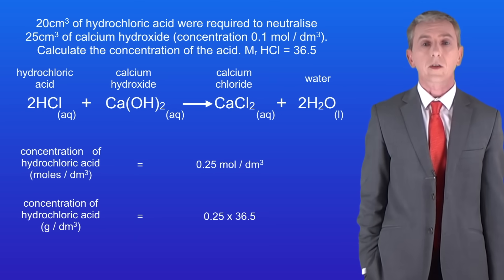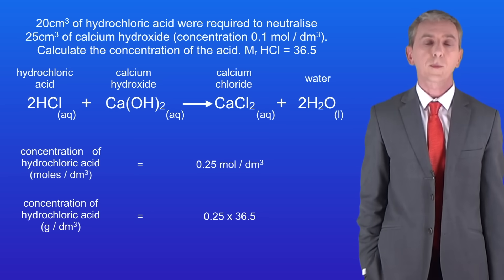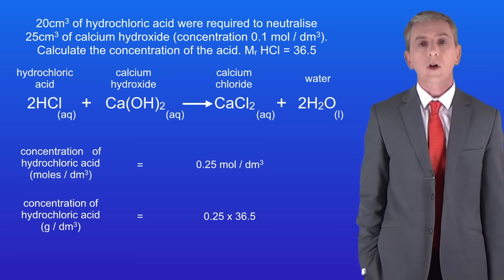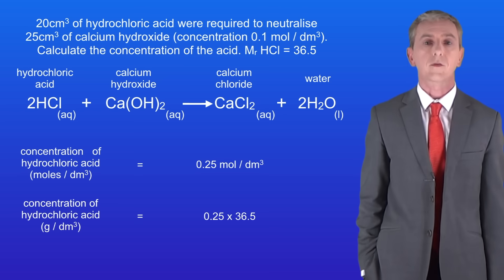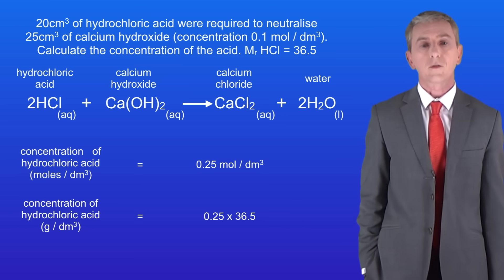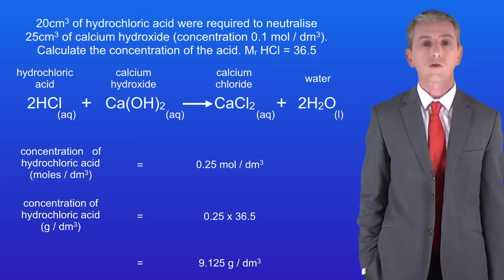We can also calculate the concentration in grams per decimetre cubed by multiplying the concentration in moles per decimetre cubed by the relative formula mass of hydrochloric acid. Hydrochloric acid has a relative formula mass of 36.5. Multiplying 0.25 by 36.5 gives us a concentration of 9.125 grams per decimetre cubed.